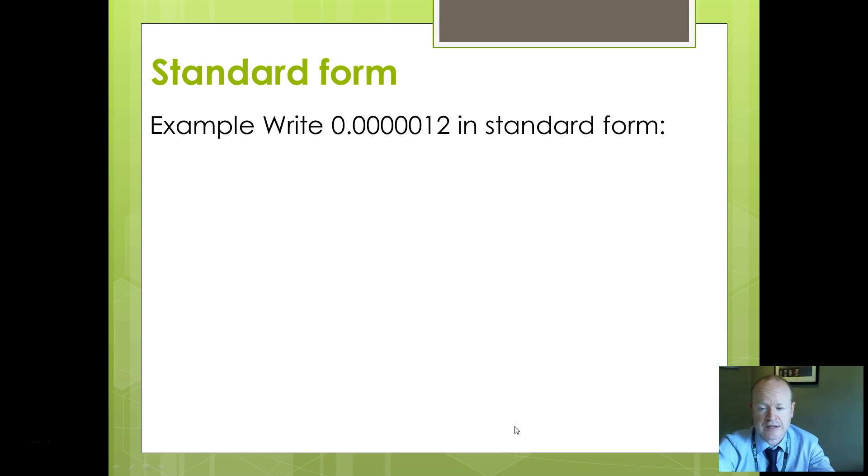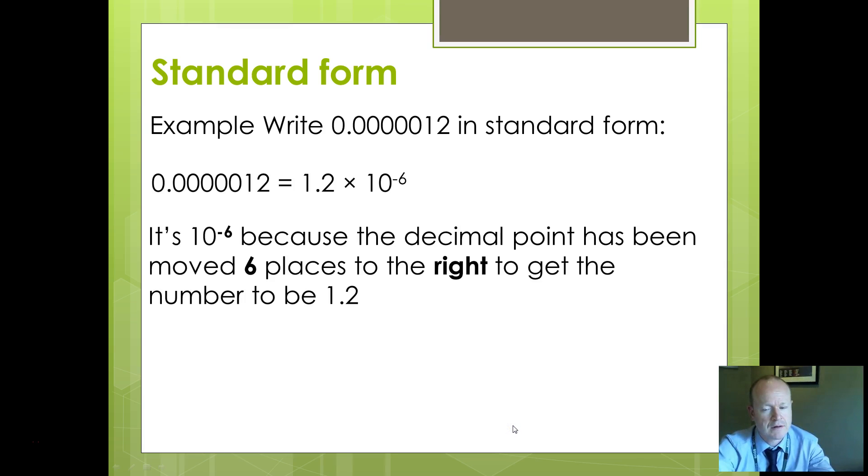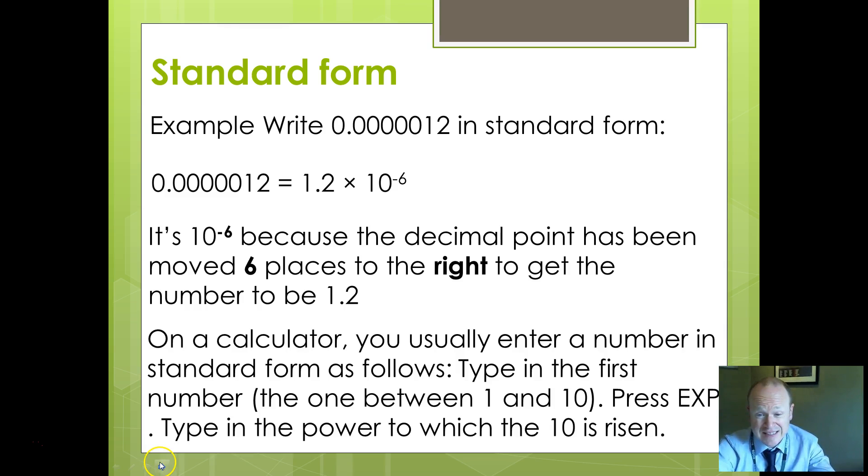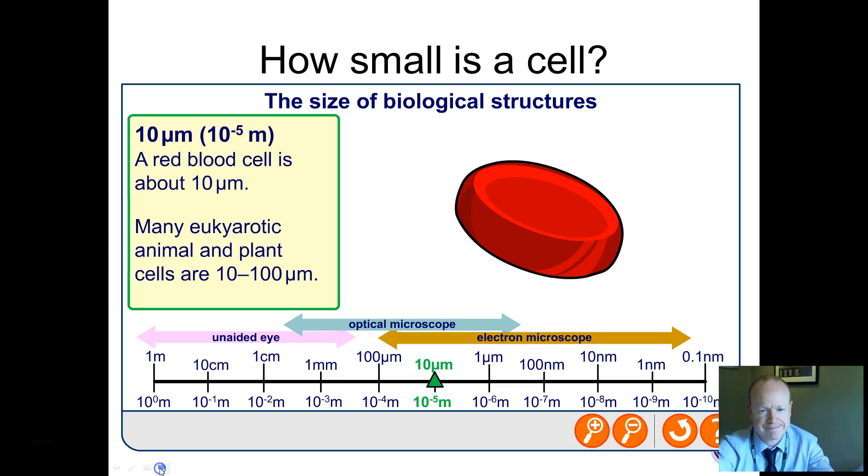Convert this decimal into standard form. Write this in standard form. You've got to take it and to get it to be a decimal point, move the decimal point across. This time we're moving it across to the right. So we've got to be 1.2 times 10 to the minus 6. Moving it across to the right then becomes a minus number. More examples in your pack. Please practice. To do it on a calculator, type in your number between 1 and 10, press exp, type in the number to which 10 is risen. If you get a chance to access this presentation, you can play around with how small a cell is. We'll skip this because it's an interactive thing that you can try at home.